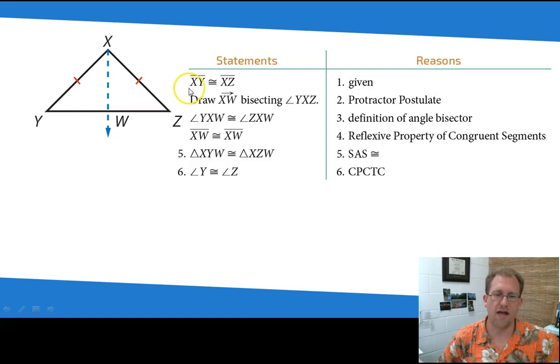Here we have XY is congruent to XZ. That's given. And then I'm going to draw ray XW bisecting angle YXZ. So I'm going to add an auxiliary line here. That's just a protractor. I can use a protractor to draw a line. And so I have angle YXW congruent to angle ZXW. These two angles here are congruent. And that's the definition of an angle bisector.